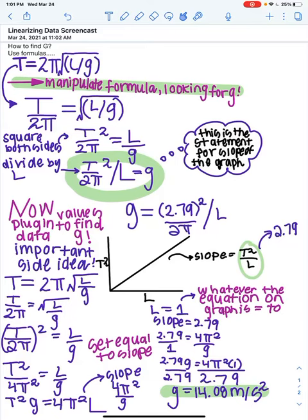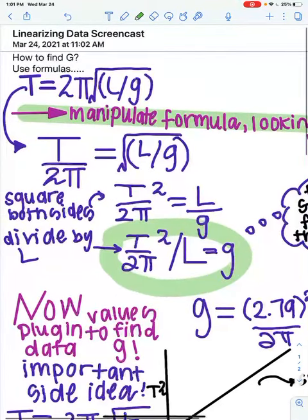Starting with the known equation for period, which is this one right here, T squared equals 2π times the square root of L divided by g.